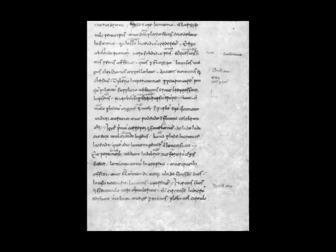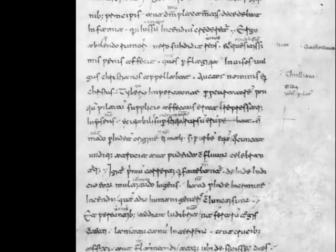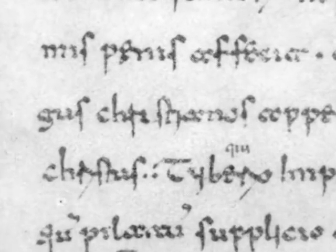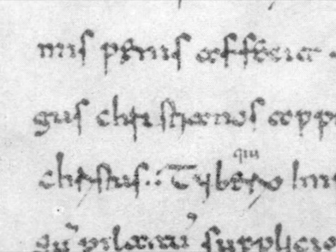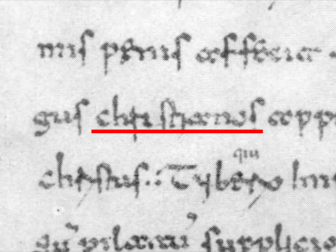This is a photo of the page from Tacitus' Annals that contains the passage in question. It's from the earliest known existing manuscript. Here you can see the word Christians, or as it is written here, Christianos. You can read the letters easily enough: C-H-R-I-S-T-I-A-N-O-S. The S's look a little bit like F's.